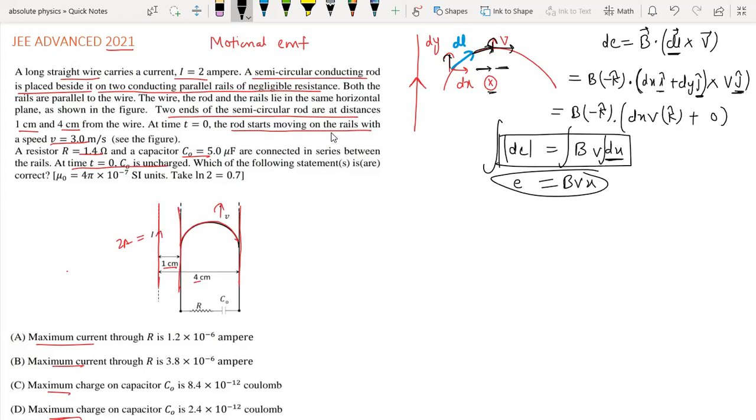This is the EMF induced in this segment, which depends on the x position. Now for this wire moving with velocity perpendicular to its length,